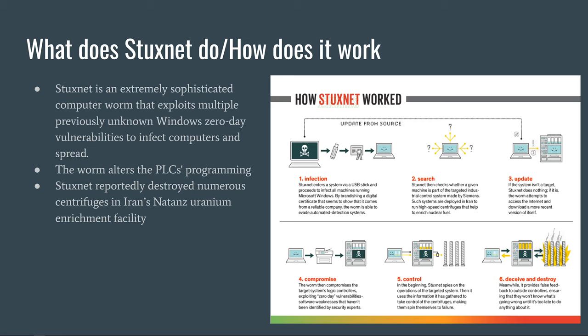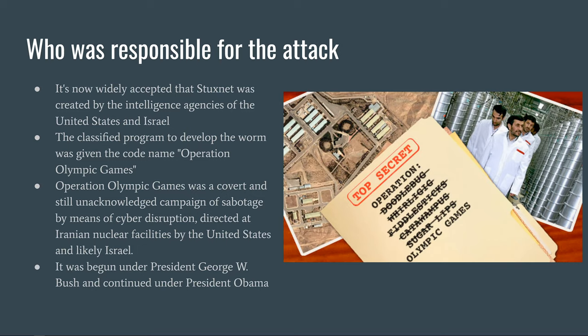It is now widely accepted that Stuxnet was created by the intelligence agencies of the United States and Israel. The classified program to develop the worm was given the code name Operation Olympic Games. It was started under President George W. Bush and continued under President Obama. Operation Olympic Games was a covert, still unacknowledged campaign of sabotage by means of cyber disruption directed at Iranian nuclear facilities by the United States and Israel.